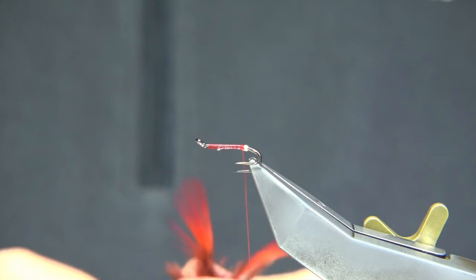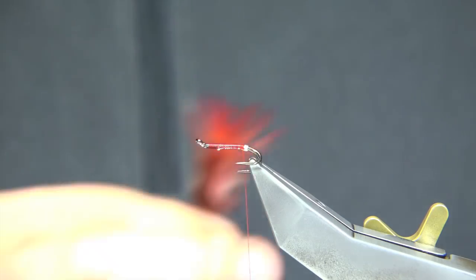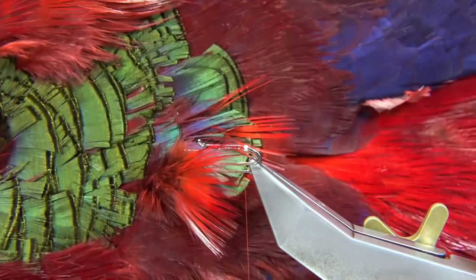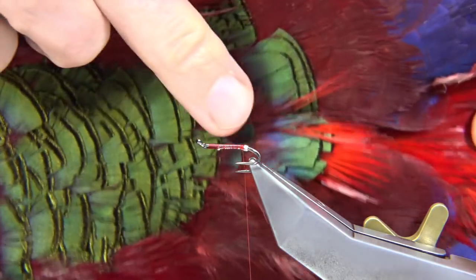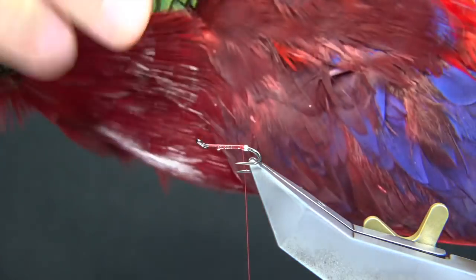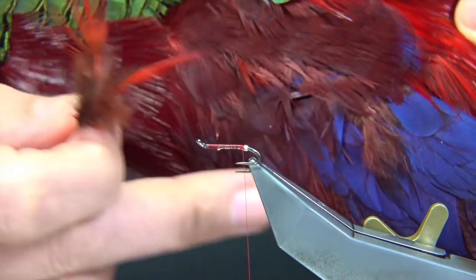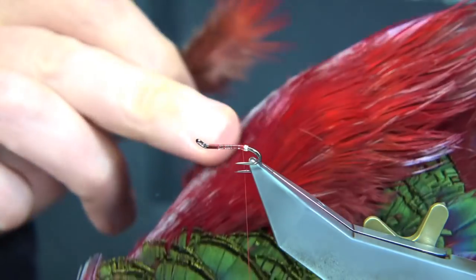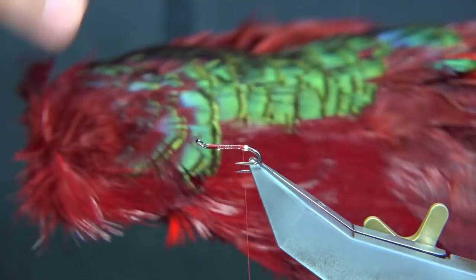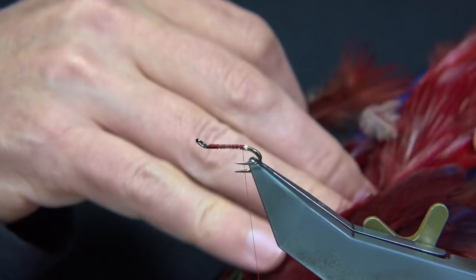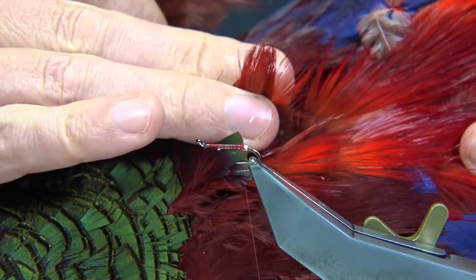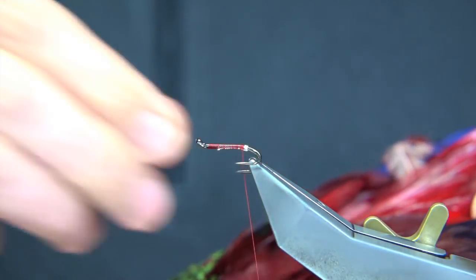Now the hackles I'm using, these are from a golden pheasant skin. These are the rump feathers and they're really meant to be yellow. Normally for a shrimp fly you would be using these breast feathers, these ones. But I'm using for this fly the rump feathers which have been dyed red and you see that lovely color you get. It's a beautiful color.